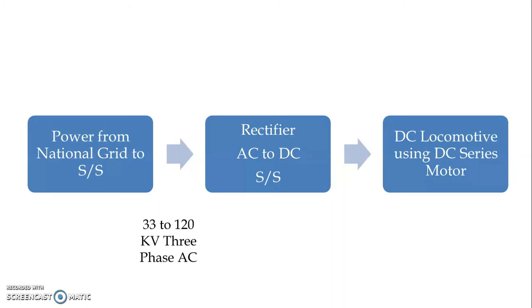From the grid, we get three-phase AC power of 33 to 120 kV voltage. After conversion from AC to DC, the available DC voltage is in a range of 600 volts, 1500 volts, or 3000 volts, depending on the application — whether it is tramways, suburban rails, or main rails.